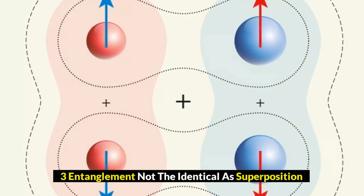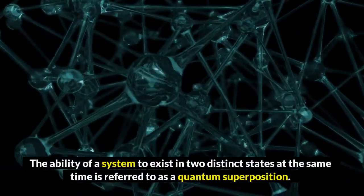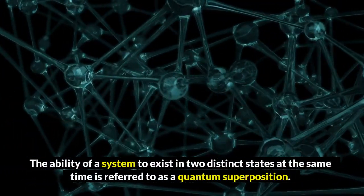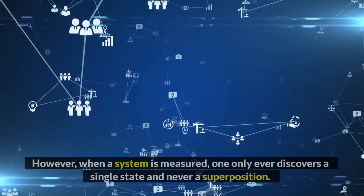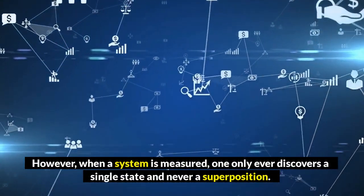3. Entanglement not the identical as superposition. The ability of a system to exist in two distinct states at the same time is referred to as a quantum superposition. However, when a system is measured, one only ever discovers a single state and never a superposition.